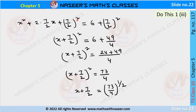After adding (7/2)² on both sides, the LHS becomes a complete square: (x + 7/2)². On the RHS we have 6 + 49/4, since 7² = 49 and 2² = 4.